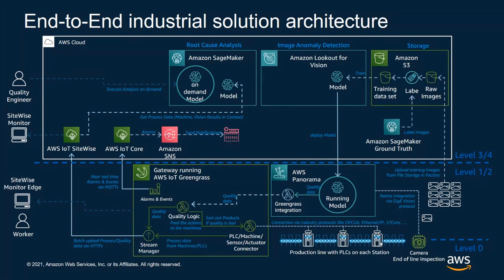Typically for an industrial solution, these PLCs, or SCADA systems, or Historians that have OPC UA protocol, will be connected to an Edge Gateway. The Edge Gateway is typically hardware that's installed locally on the plant floor or in your data center, and it's used to collect data from your industrial equipment. For AWS, on this Edge Gateway, we deploy AWS IoT Greengrass and the AWS IoT SiteWise connector. I will show you how you can connect the PLC to the Edge Gateway and ingest the data from the Edge Gateway into the cloud.